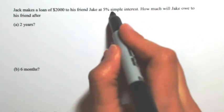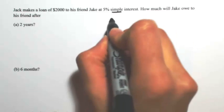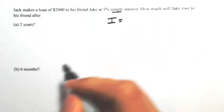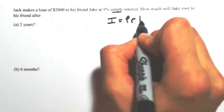Because we're talking about simple interest, we can find that by using this formula. I is equal to the principal times the rate times the time.